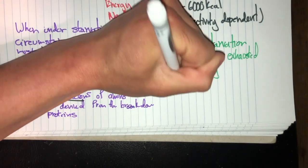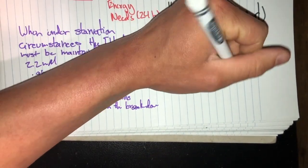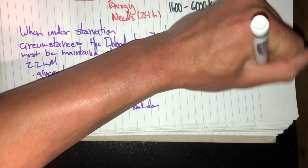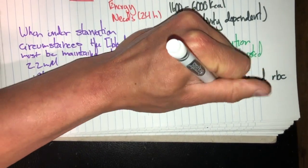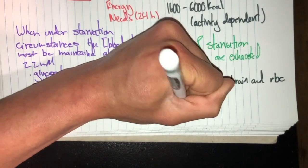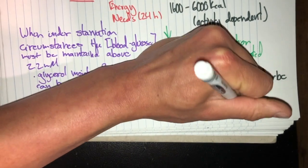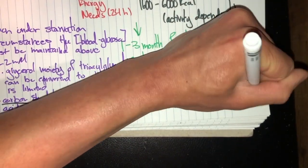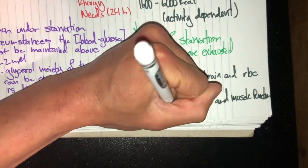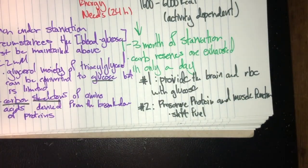Let's talk about the goals of metabolism here. The number one goal is to provide the brain and the blood cells with glucose. The number two goal is to preserve protein and muscle function. So we have to shift fuels. If we lose muscle, we lose function. We can't run away from the tiger when we're pregnant.